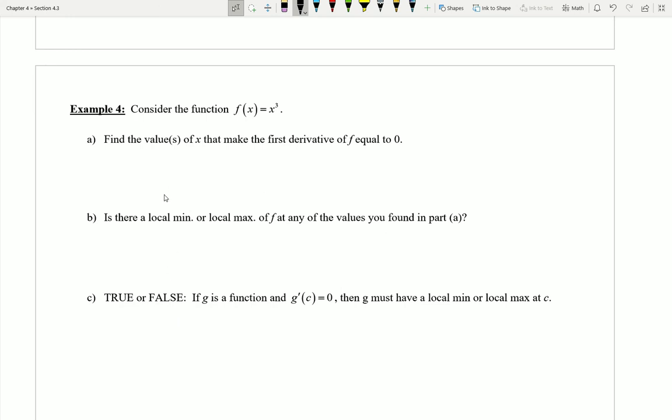Go ahead right now, pause the video, and see if you can try to work out the answers to each of these questions. When you unpause the video you'll see me work through the solutions. Hopefully you actually did go ahead and try this out. Let's see how we could answer Part A. If I'm interested in finding the values of x that make the first derivative equal to zero, the first thing I would have to do is actually calculate the first derivative.